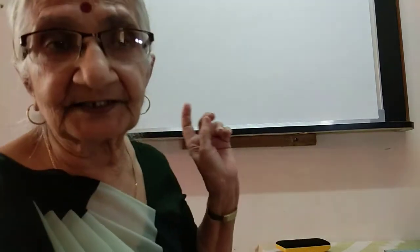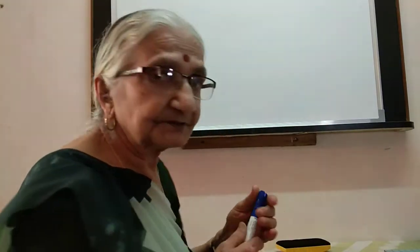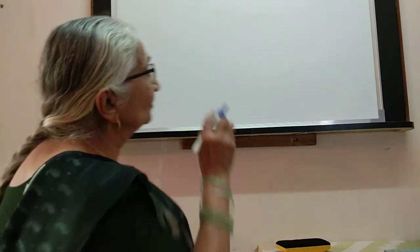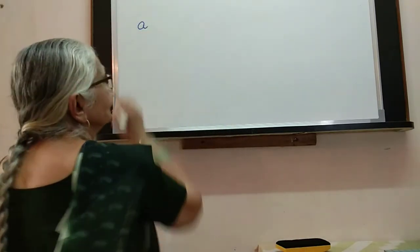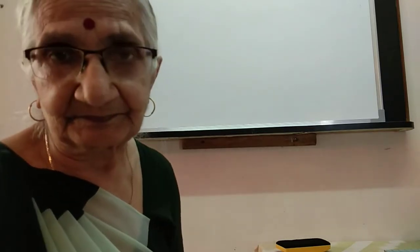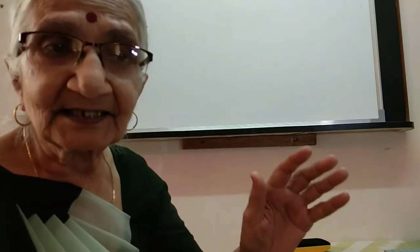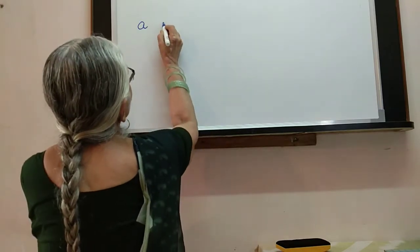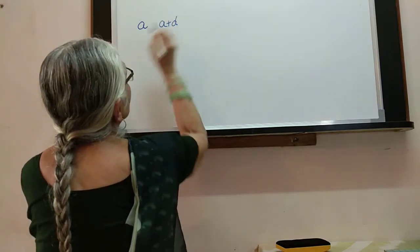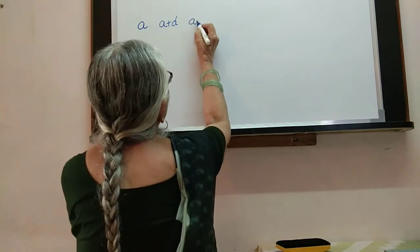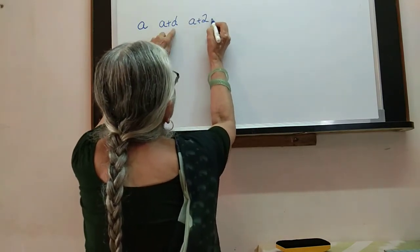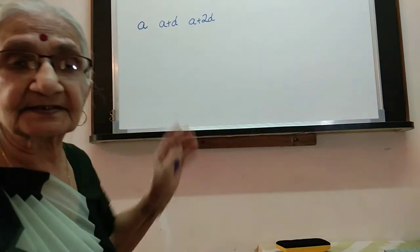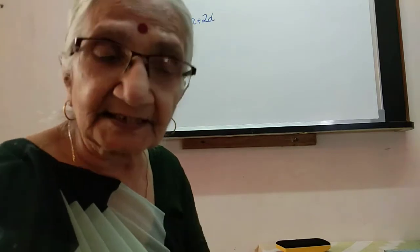The difference between any two consecutive terms is always the same. We denote the first term by 'a' and the common difference by 'd'. So the terms are: a, a+d, a+2d, and so on. This is how we get all the various terms of the arithmetic progression.